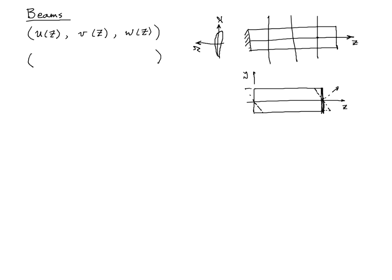In addition to the three displacement components, we need three rotation components of the cross-section. The cross-section orientation rotates rigidly, requiring three rotations: a rotation around X which may depend on Z, a rotation around Y which may depend on Z, and a rotation around Z which may also depend on Z. The kinematics of the beam can thus be described in terms of six variables — three displacements and three rotations.